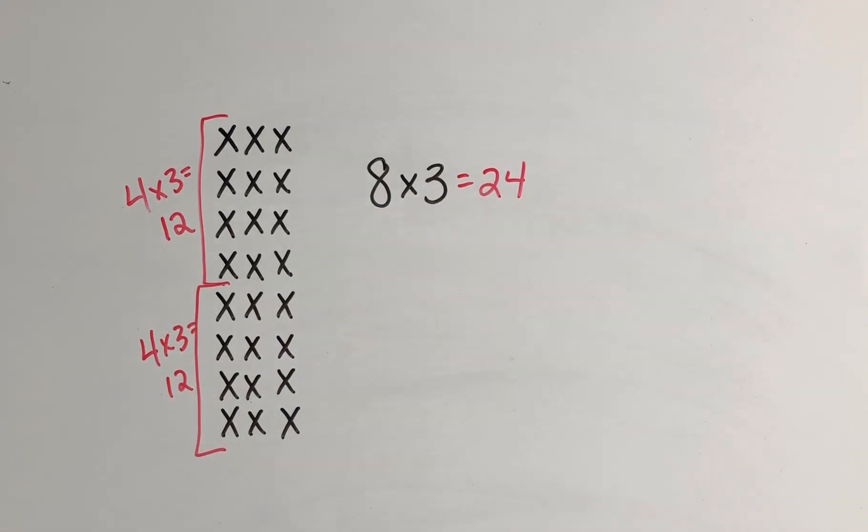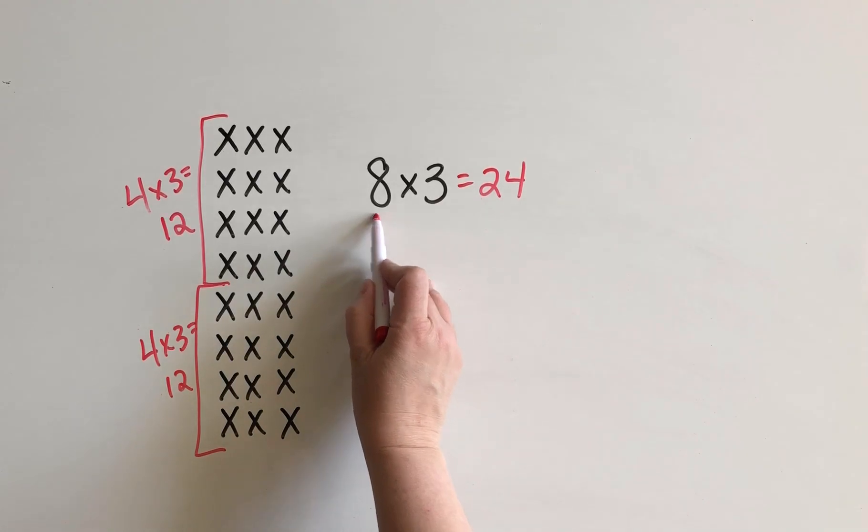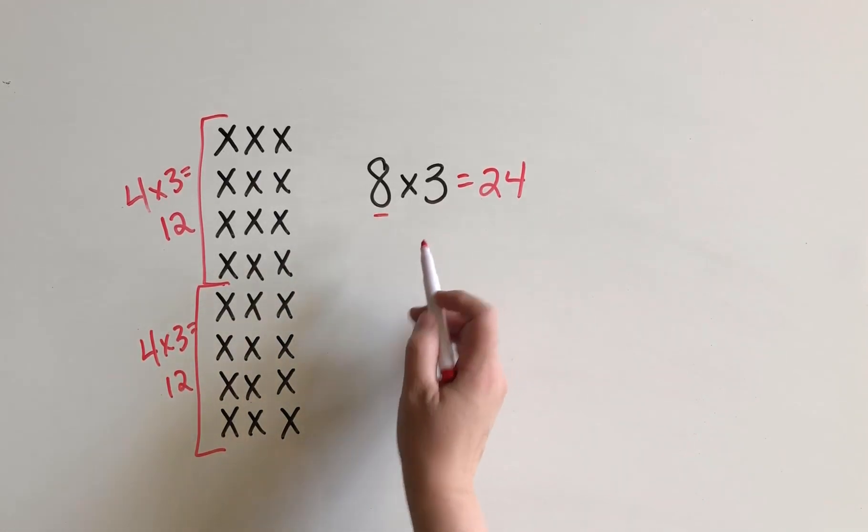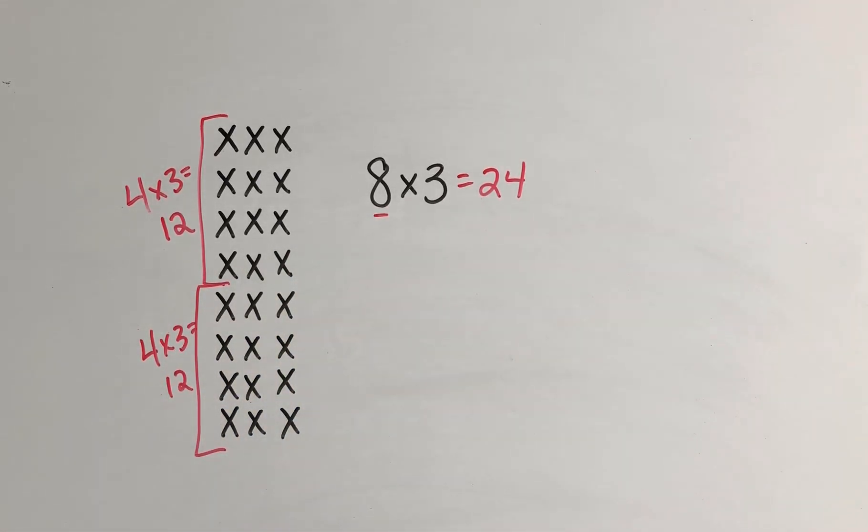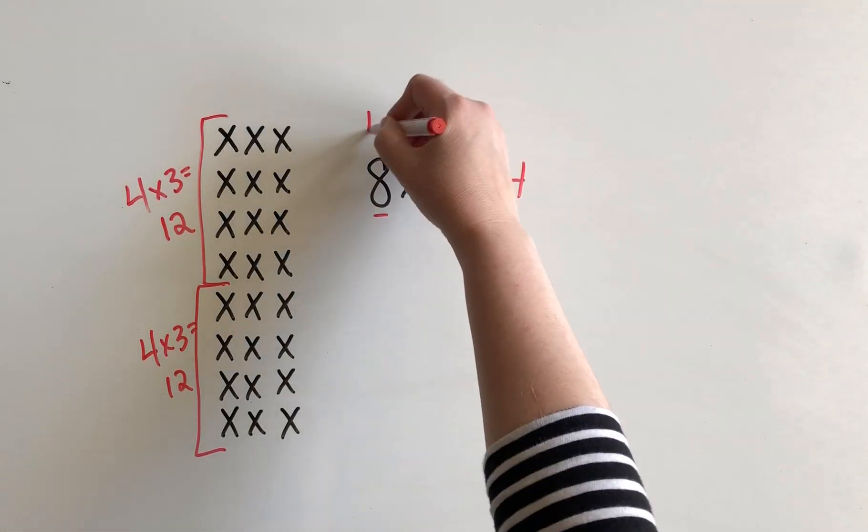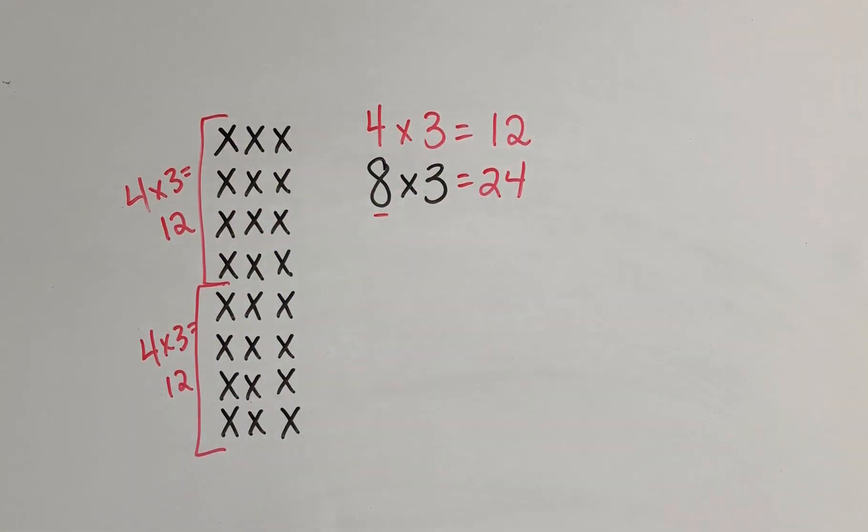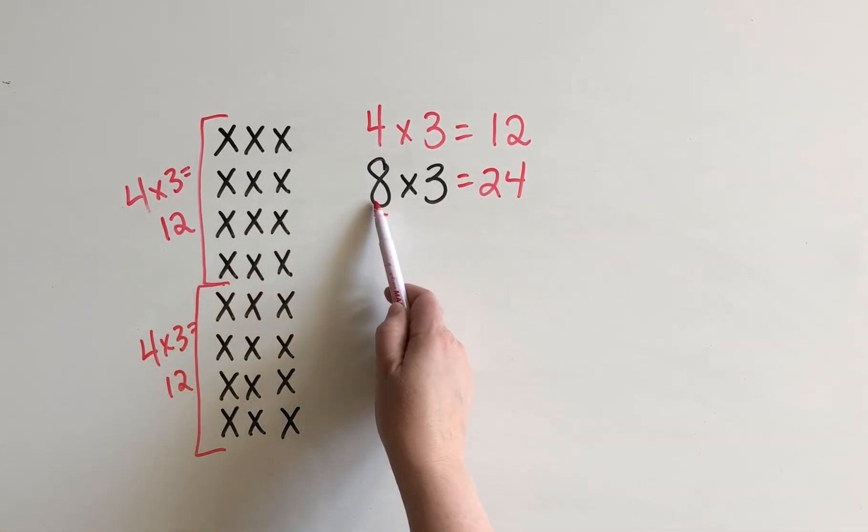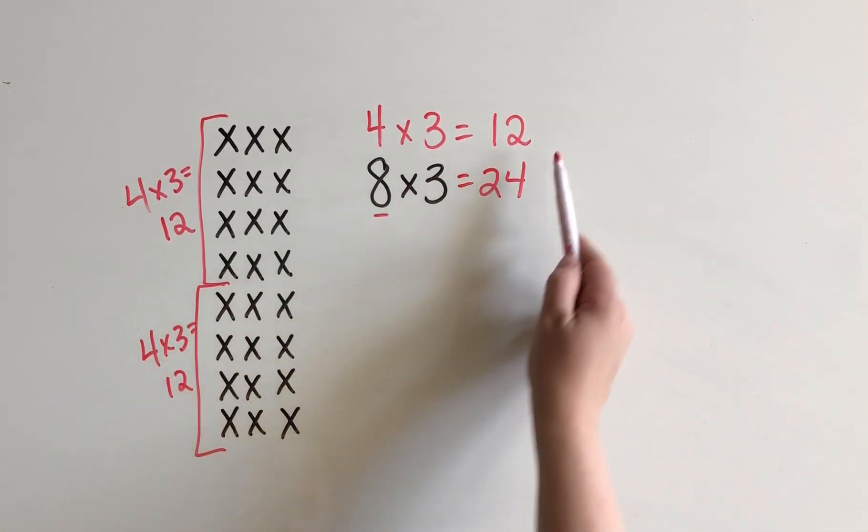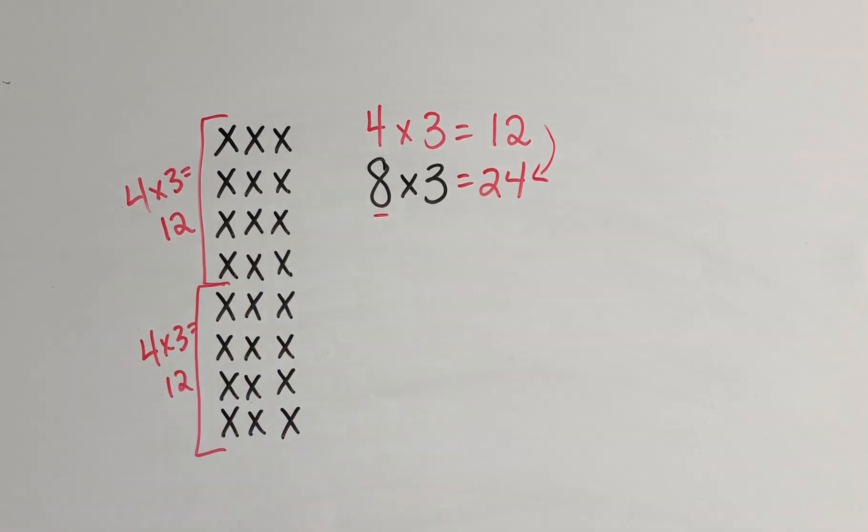So this shows us that an 8's fact is going to be the double of a 4's fact. So 4 times 3 was 12. If I double the amount of groups, then I double the product. Let's look at that again.